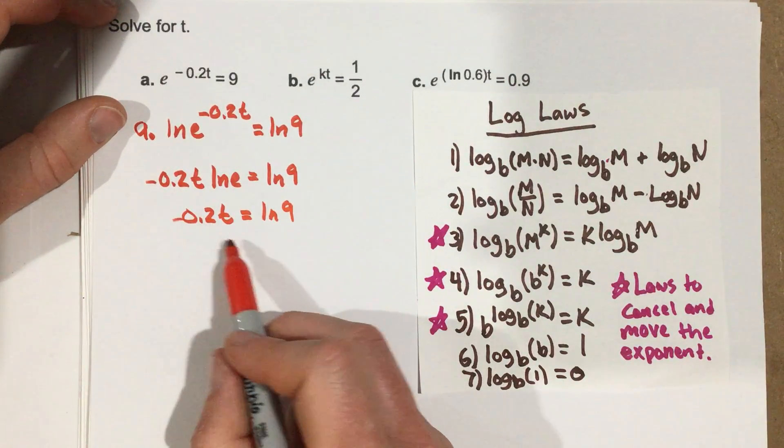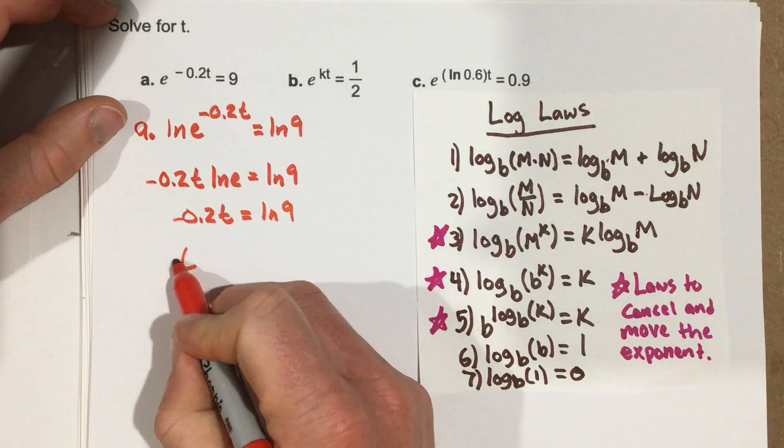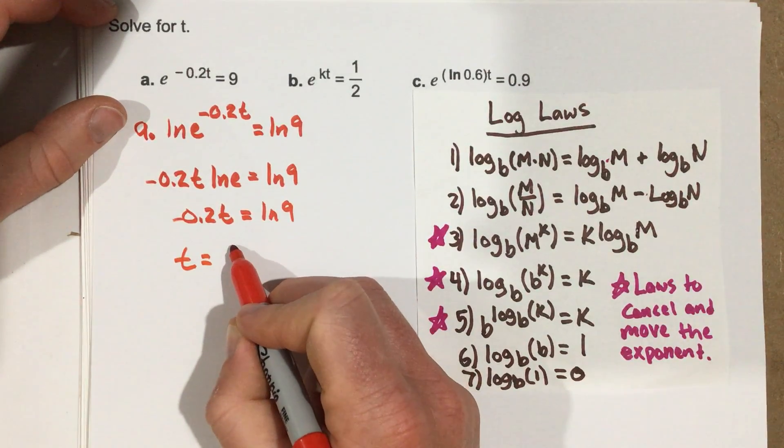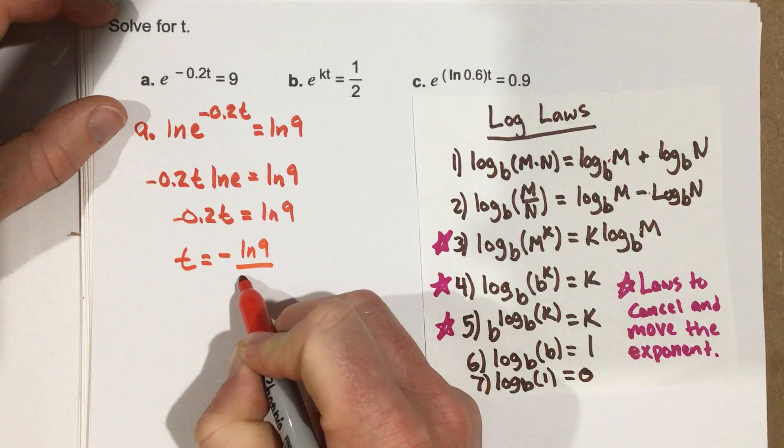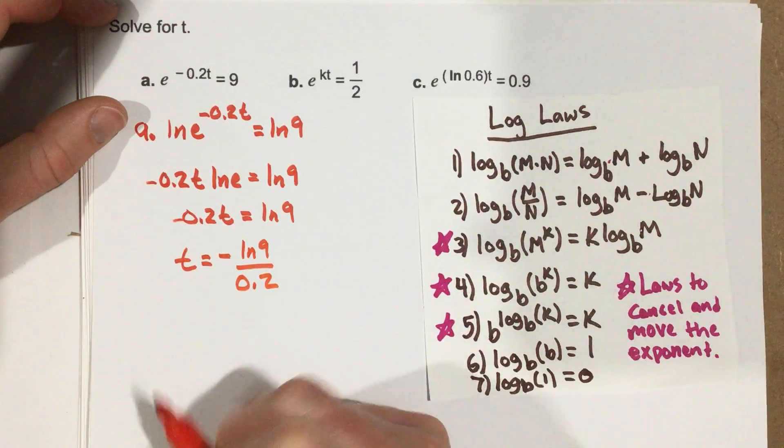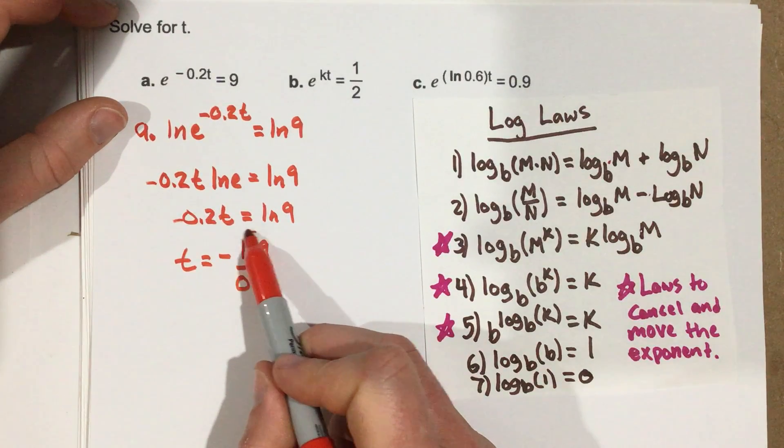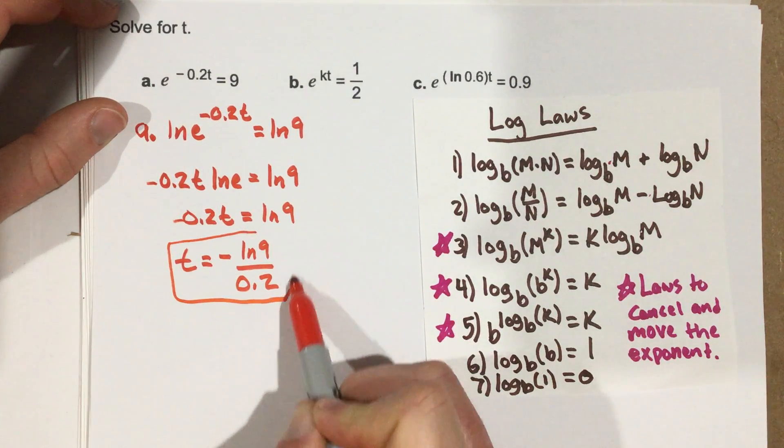Now let's divide by negative 0.2t, and we end up with t equals negative natural log 9 over 0.2. You could probably leave it like this. I don't think it's going to come out evenly, so we'll just leave it like so in fraction form.